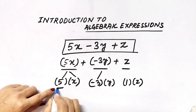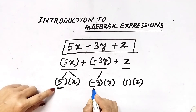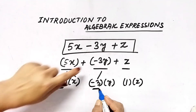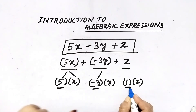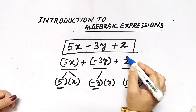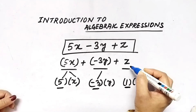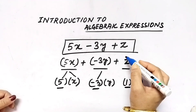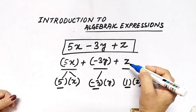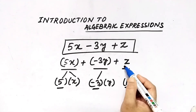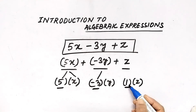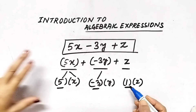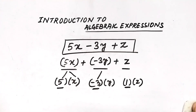Now, what is the coefficient of each term? The coefficient means the numerical factor of a term. Here the numerical factor is 5, so 5 is the coefficient. Here the numerical factor is negative 3 — not just 3, but negative 3 — so negative 3 is the coefficient. For z, no numerical factor is visible, but it is understood as 1z, so 1 is the numerical factor and 1 is its coefficient. In this way, one algebraic expression is formed.